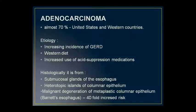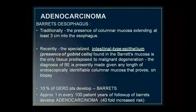Regarding histology, the esophagus has submucosal glands and heterotopic islands of columnar epithelium. Metaplastic columnar epithelium undergoes malignant degeneration, which is associated with Barrett's esophagus. Barrett's esophagus refers to a condition where the esophageal lining undergoes metaplasia — the normal squamous epithelium is replaced by columnar epithelium — typically due to gastric acid reflux at the lower end of the esophagus.